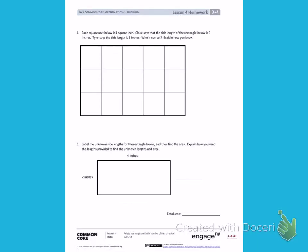This is Module 4, Lesson 4 Homework on the Back, number 4. Each square unit below is 1 square inch. Claire says the side length of the rectangle below is 3 inches. Tyler says the side length is 5 inches. Who is correct? Explain your answer.